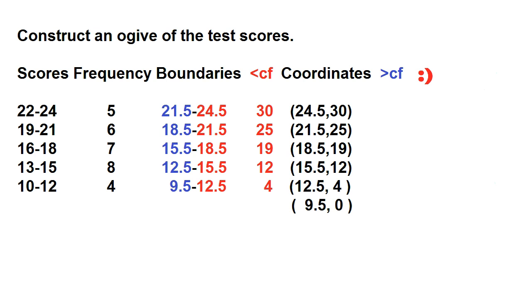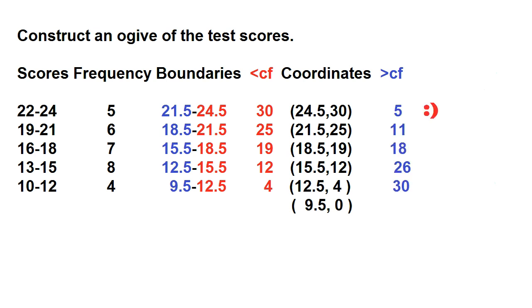Now let's find the values of the greater than or more than cumulative frequency. To find the greater than cumulative frequency, copy the frequency of the highest class interval, then add the frequency of the next lower class interval. The frequency of the highest class interval is 5, so: 5 plus 6 is 11, 11 plus 7 is 18, 18 plus 8 is 26, and 26 plus 4 is 30.